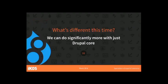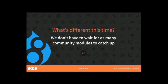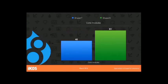In summary, the main thing that's different this time is that so much more stuff is in Drupal core that we used to have to wait for. We don't have to wait quite as long for the community stuff to catch up. To illustrate that: Drupal 7 core had 40 modules; Drupal 8 has 61. It's gone a long way.